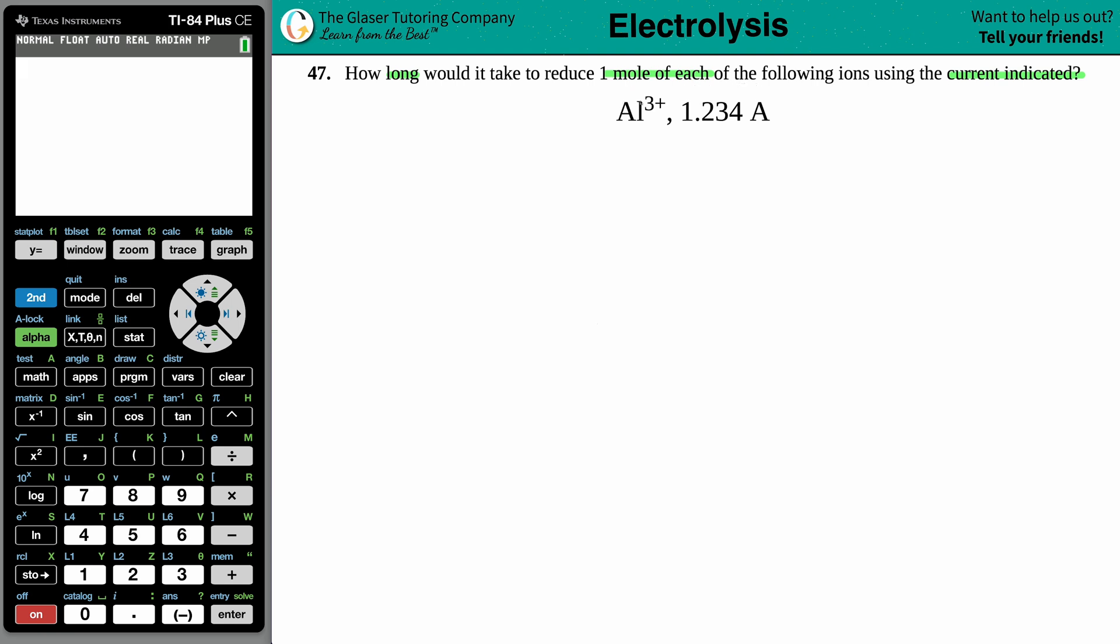So since they told us we have an ion here and a current, anytime that you see a capital A as your unit, that's amps and that's a type of current. Now they're asking for how long something is going to take, you're looking for a time. So I'm searching for a time.